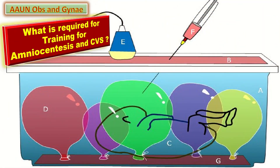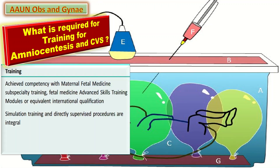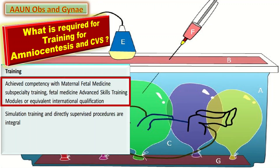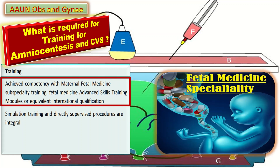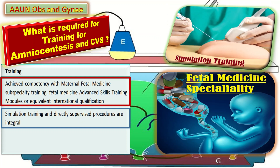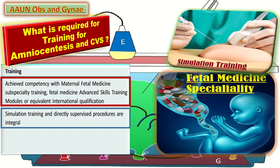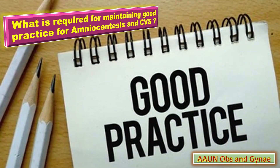What is required for training for amniocentesis and chorionic villus sampling? First, achieved competency with a maternal-fetal medicine subspeciality training, fetal medicine advanced skills training module, or equivalent international qualification. Second, simulation training and directly supervised procedures are integral.